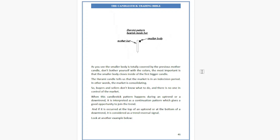When this candlestick pattern happens during an uptrend or a downtrend, it is interpreted as a continuation pattern, which gives a good opportunity to join the continuing trend. And if it occurs at the top of an uptrend or at the bottom of a downtrend, it is considered a trend reversal signal.